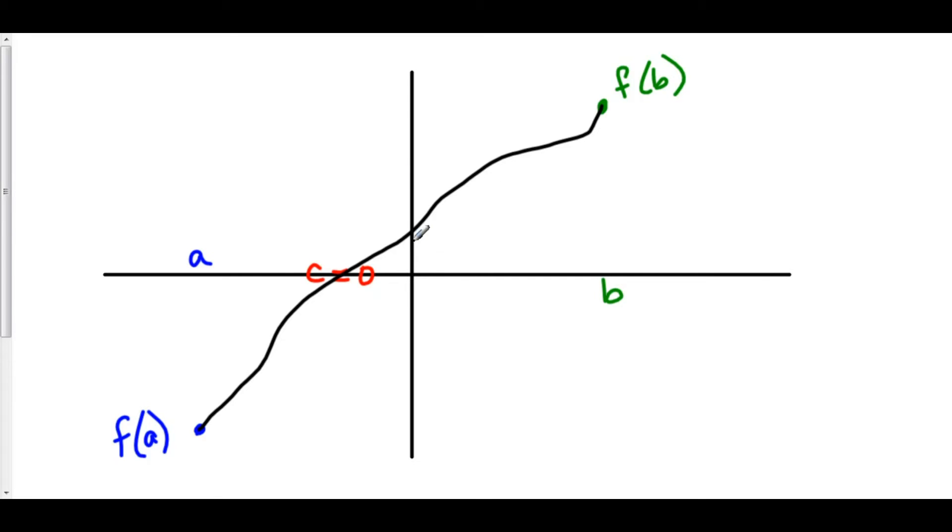So we made the example c equals zero because a line is a very visual thing, but c could have been one, two, three, four. C could be any number in between f of a and f of b. The fact is that if you draw a continuous function from f of a to f of b, it has to hit every single function value in between. And that includes every x value as well.